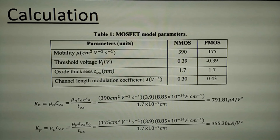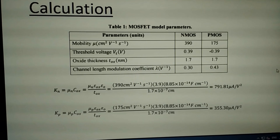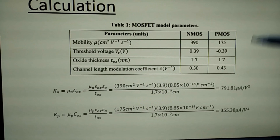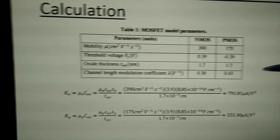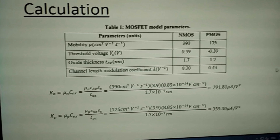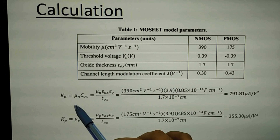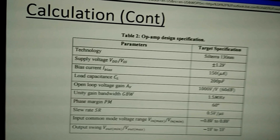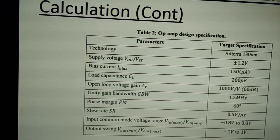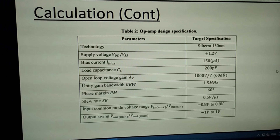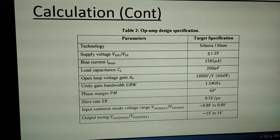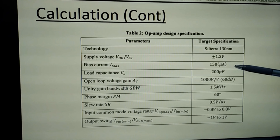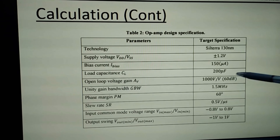Now we are going to talk about the calculation — how we design an op-amp. We are using 130 nanometer technology, and these are the parameters extracted from the datasheet: the conducting parameter for NMOS and the conducting parameter for PMOS. The op-amp design specifications given in the assignment include a supply voltage of plus/minus 1.2 V and a bias current of 150 microamperes. The load capacitor is 200 pF.